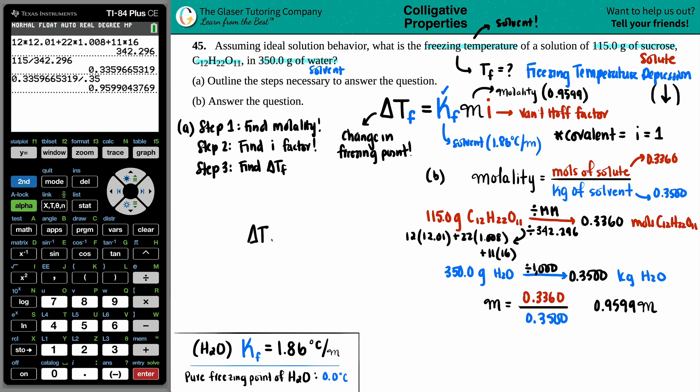equals that K value, which we found in the back of the book, 1.86, times by the molality, which was the 0.9599. And then we'll times it by the van't Hoff factor, which is one, but if it's one, you don't even have to worry about it. So delta Tf equals 1.86 times this whole number. And I get a pretty small number, 1.78, 1.79 or 1.8, I guess.